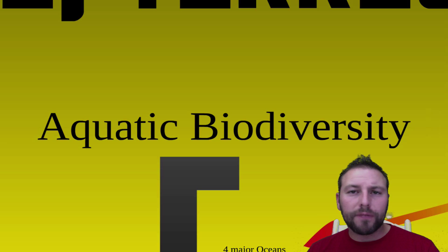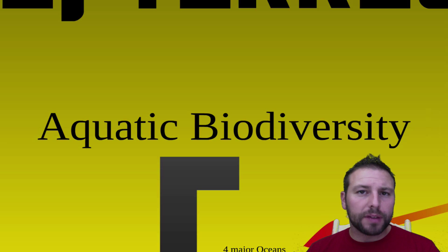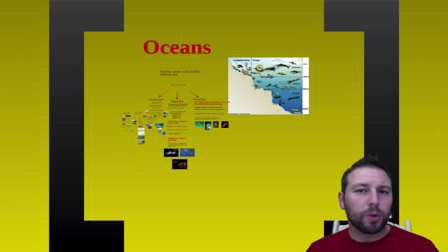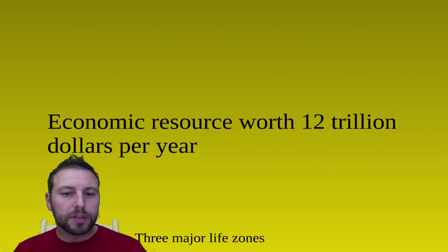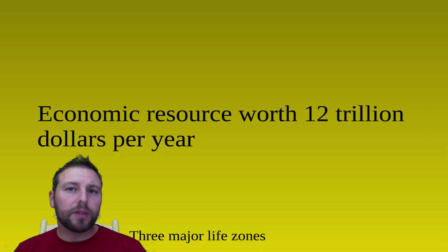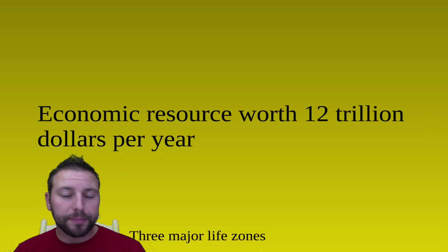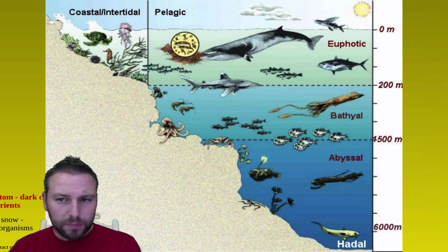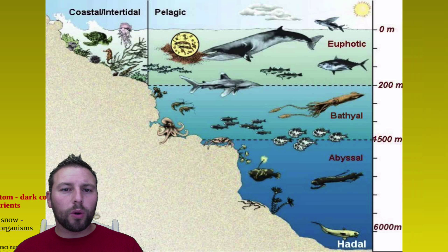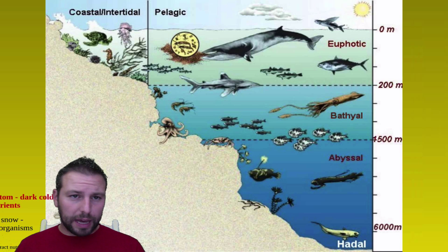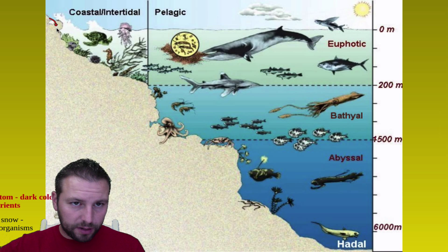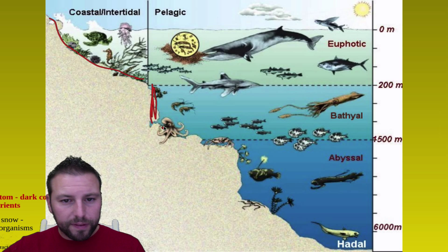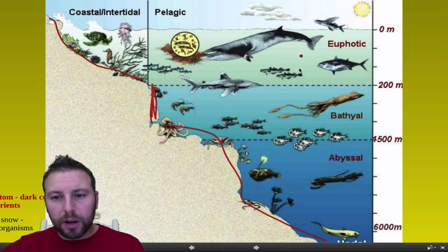These areas have roughly a salinity of three percent, and that can vary a little bit, but they're definitely separated out from our freshwater zones looking at that salinity. Our oceans can be divided up into a number of different life zones. All in all, those life zones together are worth roughly 12 trillion dollars per year and provide numerous ecosystem services for us besides just fish and whatever we pull from them for food.